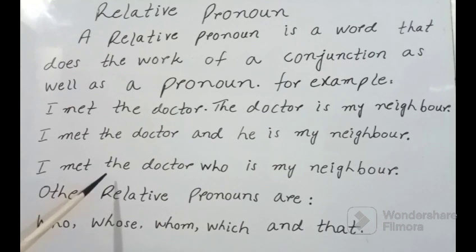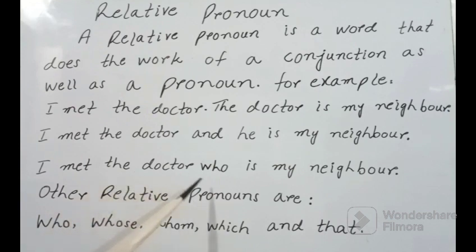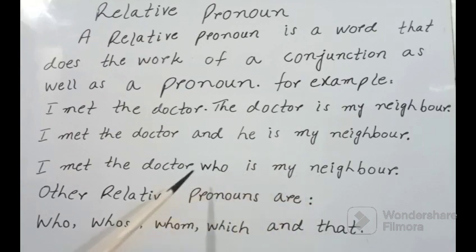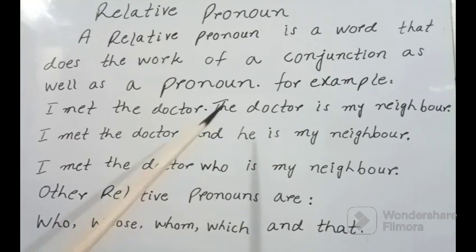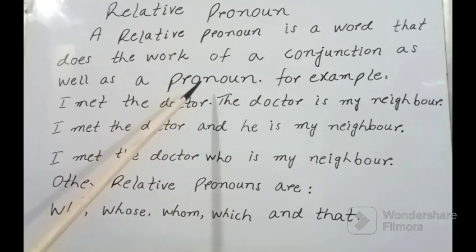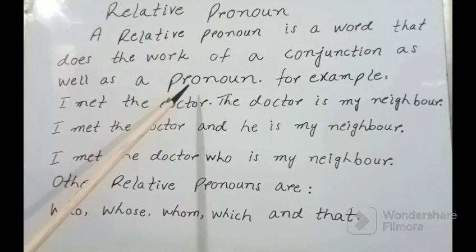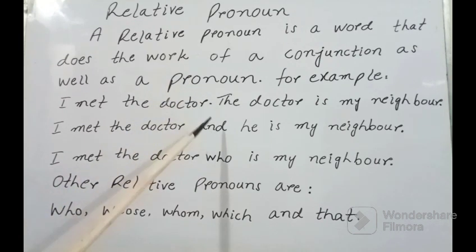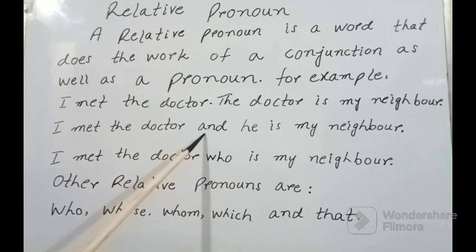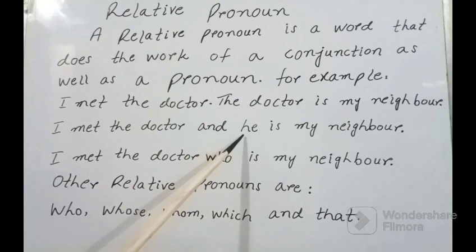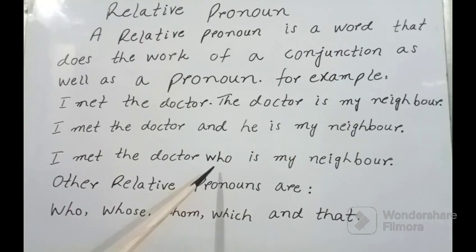اب ہم دیکھیں گے کہ کس طرح relative pronoun کا استعمال اس sentence میں ہوگا: 'I met the doctor who is my neighbor.' میں ڈاکٹر سے ملی جو میرا ہمسایا ہے. یہاں پہ 'who' نے conjunction 'and' کو بھی ہٹایا اور personal pronoun کو بھی، اور جسٹ ایک word 'who' لکھ دیا.